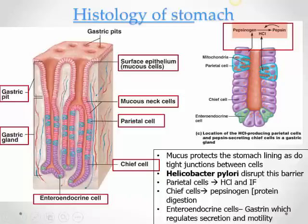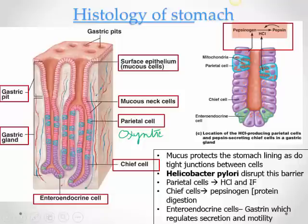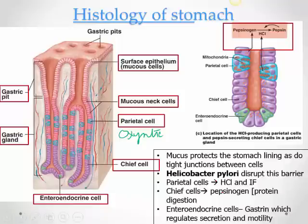Parietal or oxyntic cells produce HCl and intrinsic factor. Chief cells produce pepsinogen, which needs an acid medium to convert to pepsin for protein digestion. The stomach also has enteroendocrine cells which produce a hormone called gastrin. Gastrin stimulates chief and parietal cells to secrete HCl and pepsinogen, and also promotes gastric motility.